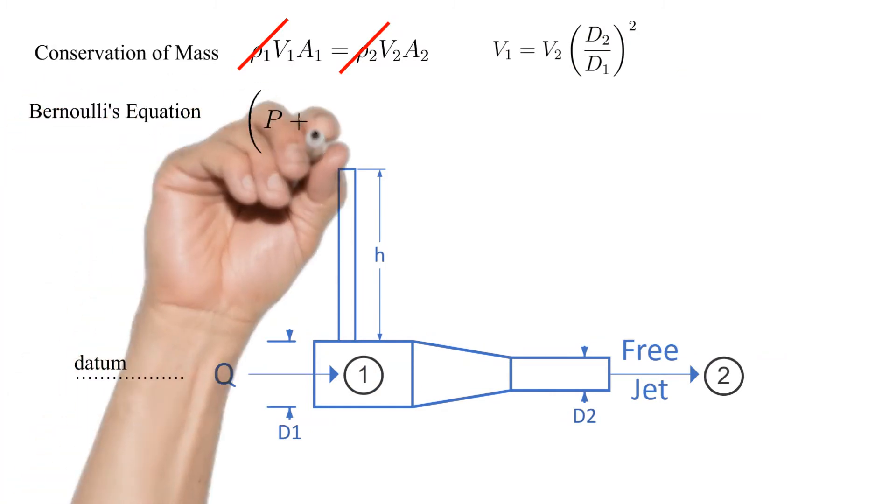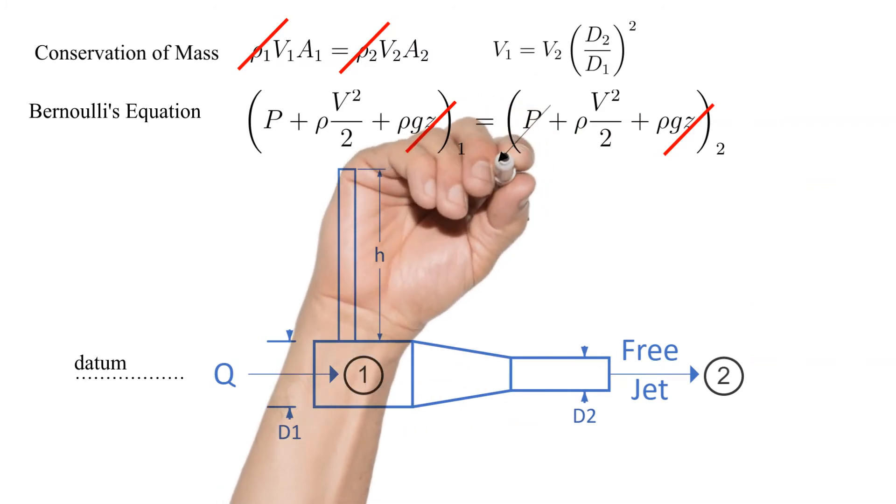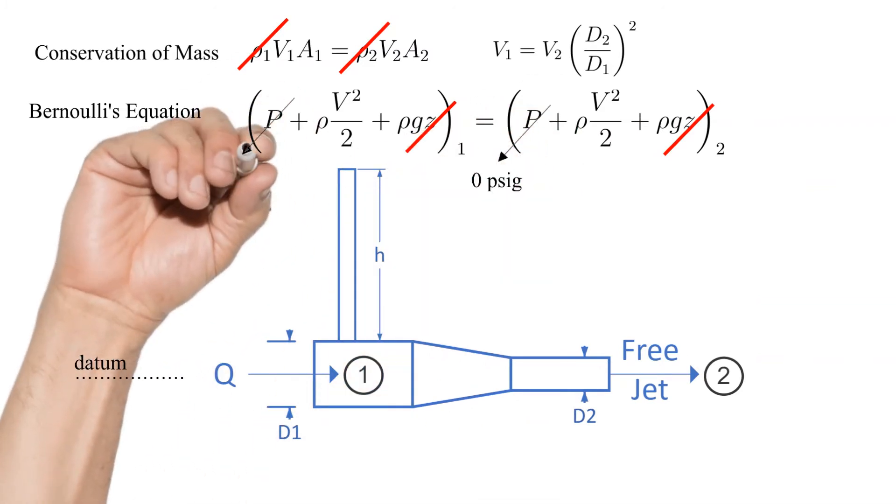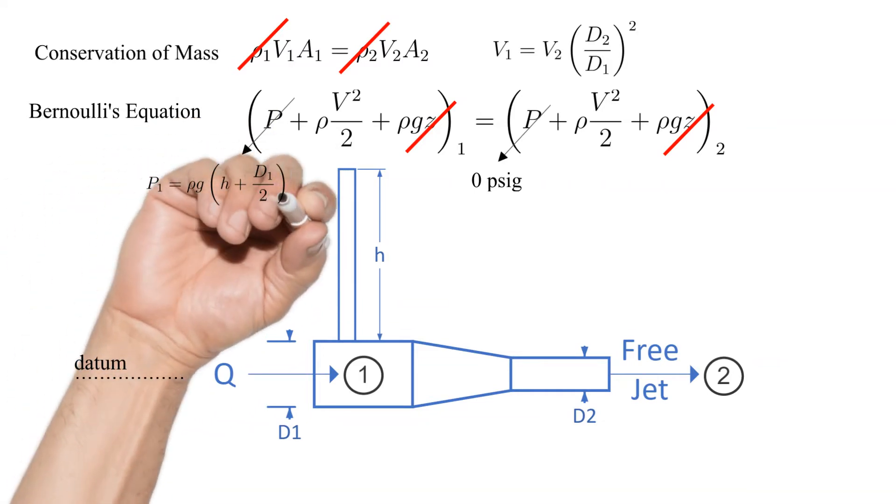Next let's apply Bernoulli's equation from point 1 to point 2. The elevations at both points 1 and 2 are equal so those terms cancel. The pressure at 2 is atmospheric or 0 psig. The pressure at 1 is due to the static column of water above the datum. This may not be obvious.